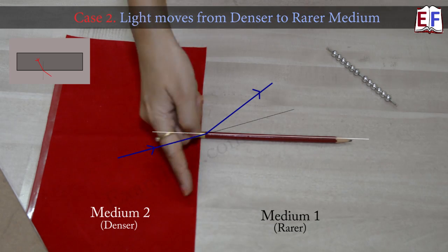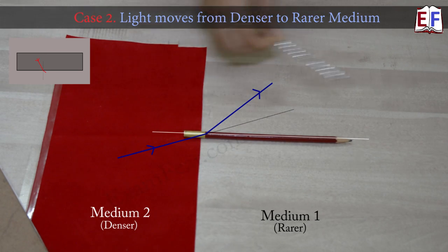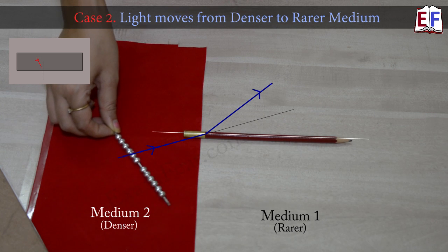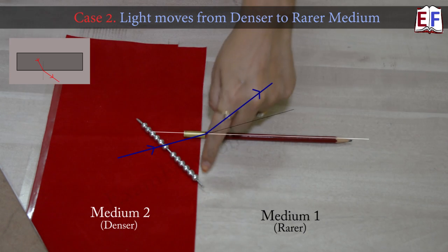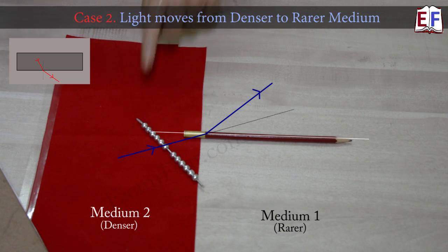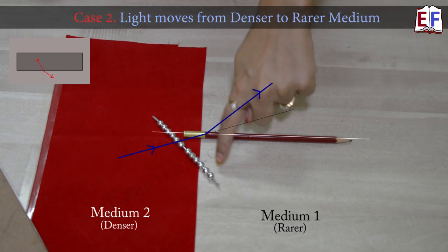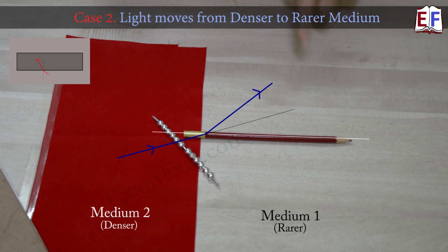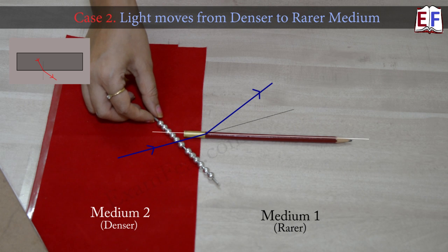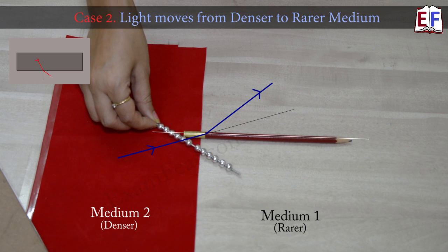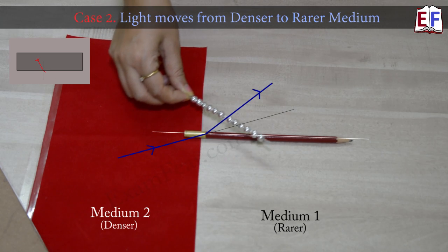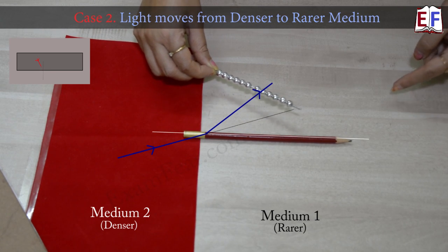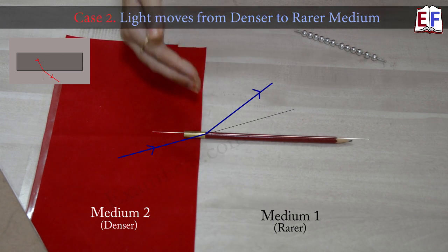Why did it move away from the normal? This time this was our interface. These beads were approaching the interface like this. When these beads was at this point, this one was at this point. So when it crossed this point, these two beads were in the rarer medium, whereas all of these were still in the denser medium. So as a result, these two beads were moving faster because this is rarer medium, whereas all of these were moving slower. So as a result, it slightly bended like this because they are moving faster now. Therefore, instead of reaching a point somewhere here, it actually reached somewhere here, so it went away from the normal.